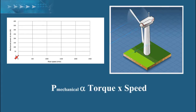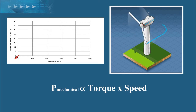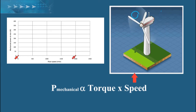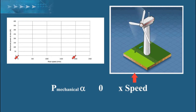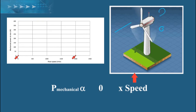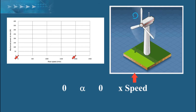Now if I let the blades rotate freely, they won't go to an infinite speed. At a certain point, the friction will bring the available torque back to zero. The power available to the generator at this point is also zero since I have speed but no torque.